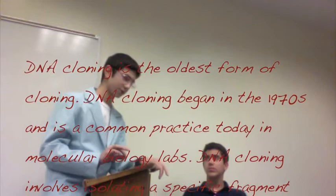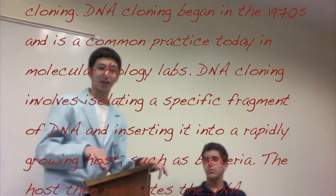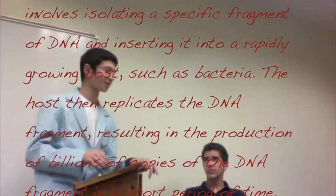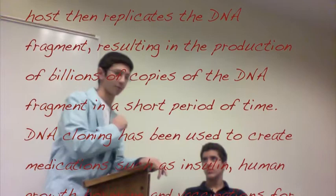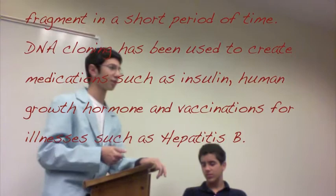DNA cloning involves isolating a specific fragment of DNA and inserting it into a rapidly growing host, such as bacteria. The host then replicates the DNA fragment, resulting in the production of billions of copies of DNA in a short amount of time. DNA cloning has been used to create medications such as insulin, human growth hormone, and hepatitis B.